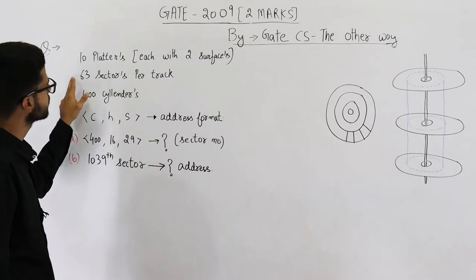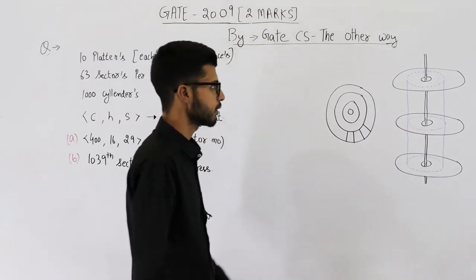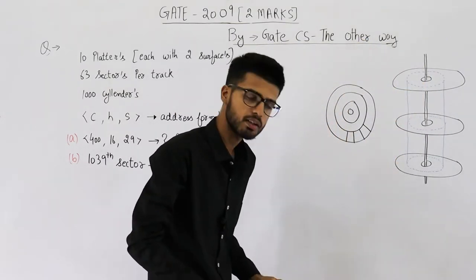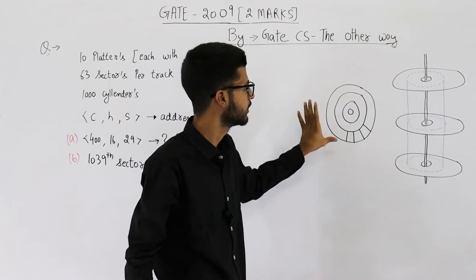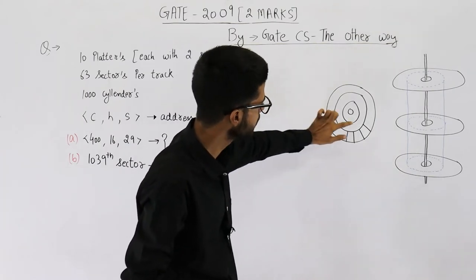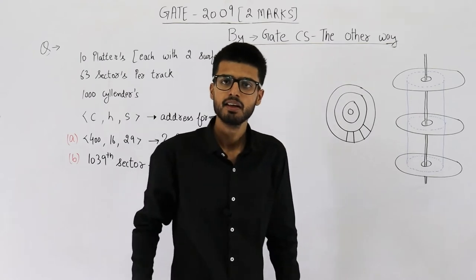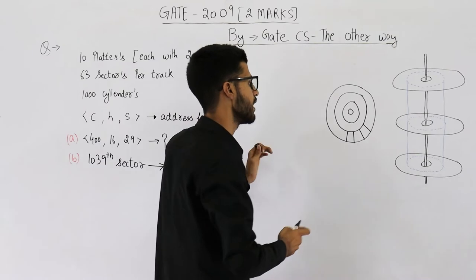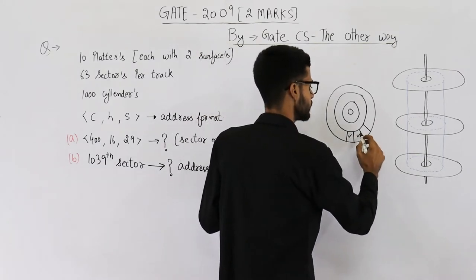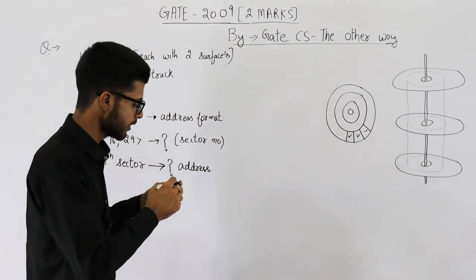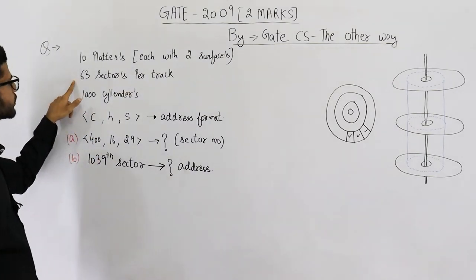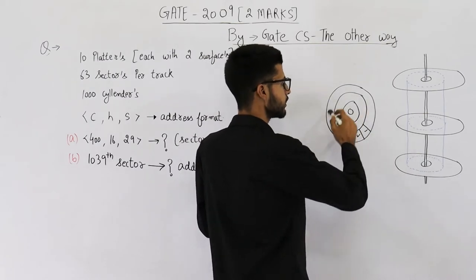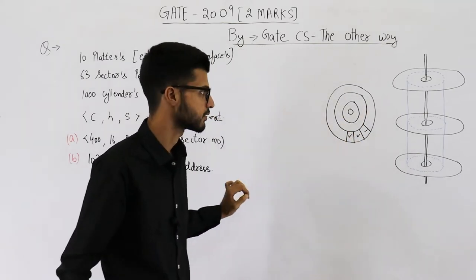There are 63 sectors per track. If you take a top view of a platter, you will see concentric circles — these circles are called tracks. Within these tracks you have sectors. Each and every track will have 63 sectors.